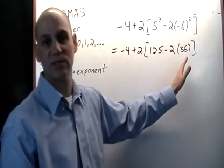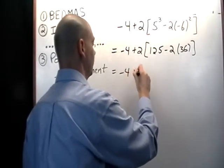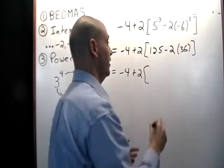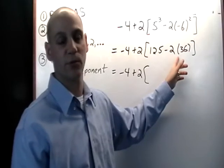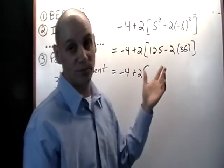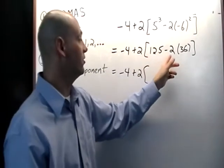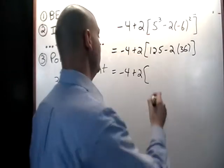And so we've started to complete what's inside the bracket here. However, there's still more to do so we can keep moving along. The next thing we have is a subtraction and a multiplication within this bracket. So according to BEDMAS we're going to do the multiplication first and then the subtraction. So the first thing we're going to do is 2 times 36, which is 72.